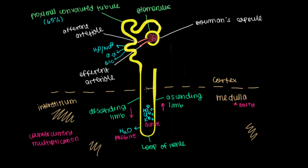Alright, so I think we have a pretty good understanding of the loop of Henle and the countercurrent multiplication process that happens here. The next part of the nephron is this guy that kind of loops back and just kisses the glomerulus right there.